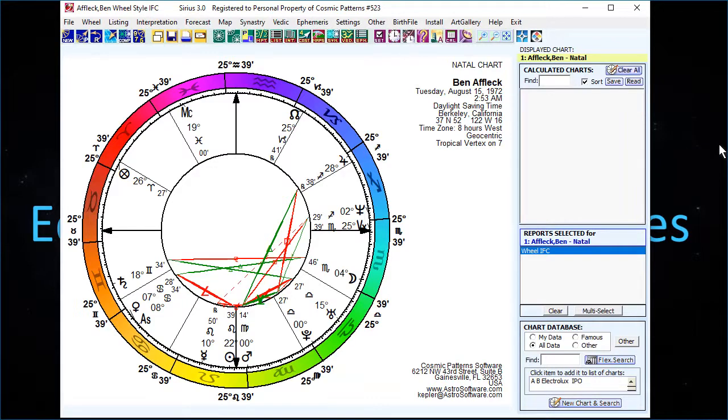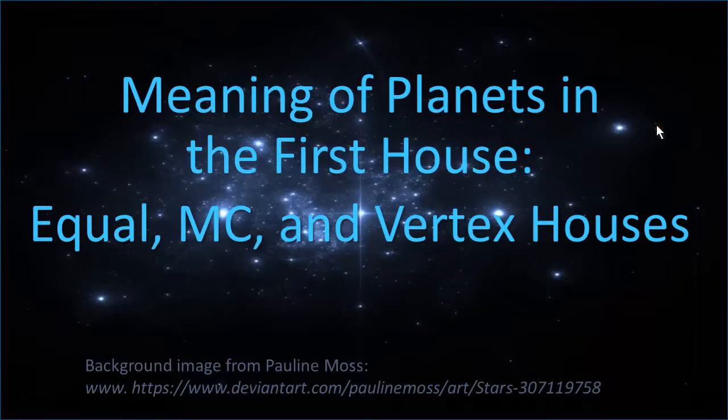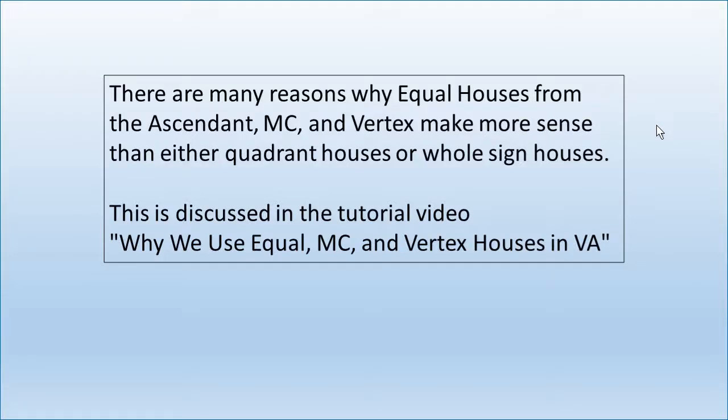These three house systems all tell us something a little bit different from each other about the person. There are many reasons why we use these three house systems — equal, midheaven, and vertex — and frankly they make more sense than any of the quadrant houses or whole sign houses. I'm not going to discuss that in this video. There's another video called 'Why We Use Equal Midheaven and Vertex Houses in VA,' and you can watch that video for the reasons why we use them.